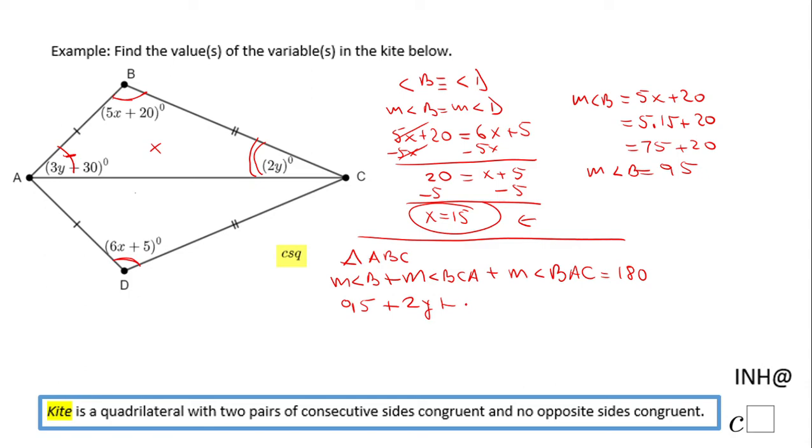Angle B we know is 95, BCA is 2y, and BAC is 3y plus 30, equals 180. So now we have an equation in y and we can combine 95 and 30, that is 125. We can combine the y's, so 5y plus 125 equals 180. We subtract 125 from both sides and we'll get 55. The last step: divide by 5, so we finish with y equals 11. And that's it.